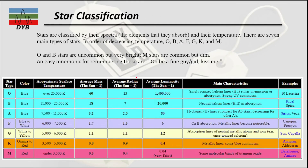Now we will look at the classification of stars. Stars are classified by their spectra — meaning the elements they absorb — and also based on their temperature. There are seven main types of stars in order of decreasing temperature, named O, B, A, F, G, K, and M. O and B stars are uncommon but very bright, while M stars are common but dim.